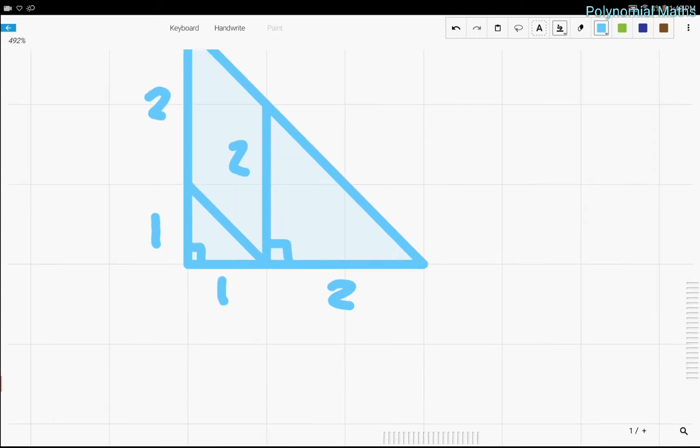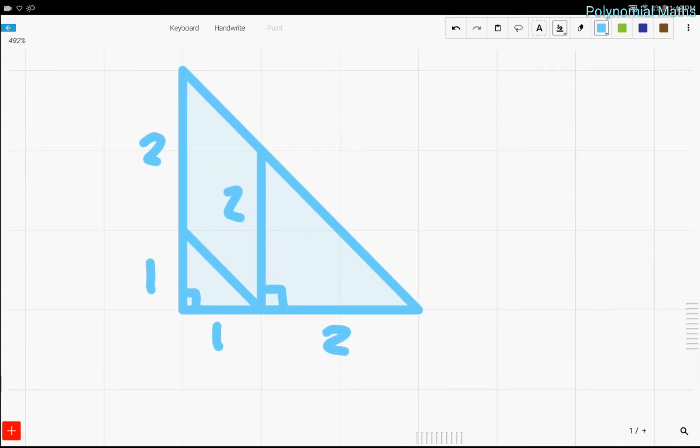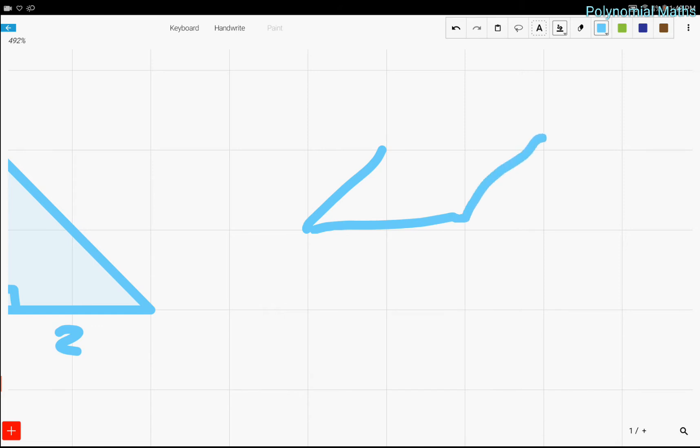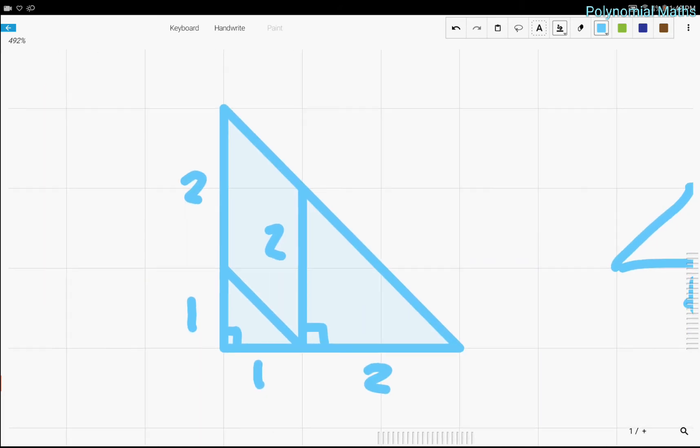Pretty simple. And from here, we see that the area of a parallelogram is just base times height. That's pretty simple because the height of the parallelogram is 1, so the area of the parallelogram is 2.